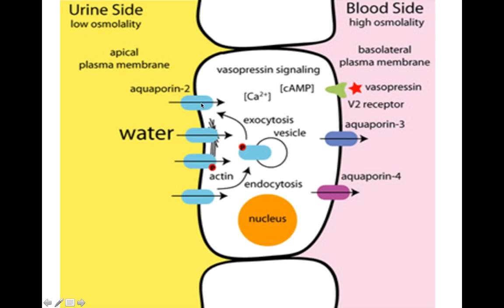However, on this side, the apical membrane, those aquaporin-2 channels are not always there. So, what cAMP is going to do is, essentially, it's going to attach those aquaporin-2 channels to the apical membrane just temporarily for the water to diffuse through.